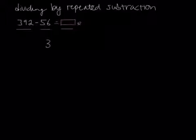So we're going to look at 392 divided by 56 as a repeated subtraction. We can do this because this statement is asking us to find the number of groups of size 56 that you can find in 392.